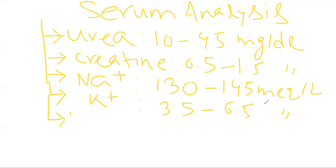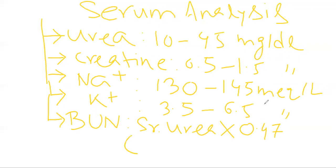Then we will have blood urea nitrogen. To simplify this test we can use the formula: serum urea value multiplied with the 0.47 factor, and its normal range is almost 5 to 26 milligram per dl. Now a few points regarding blood urea nitrogen.